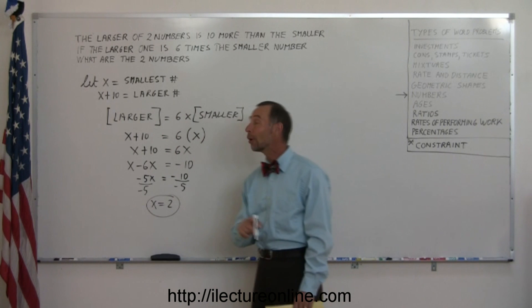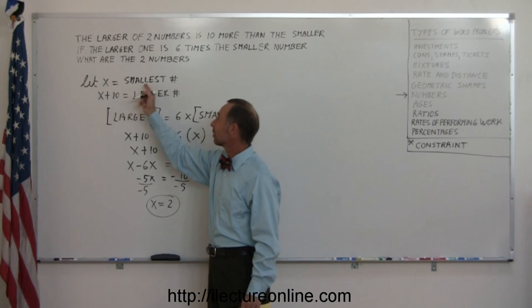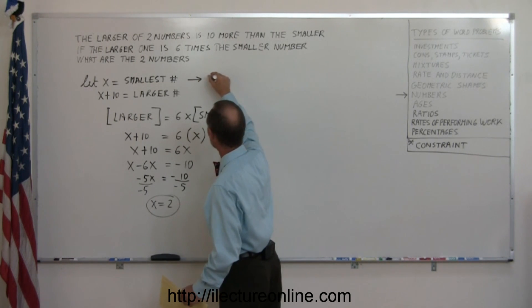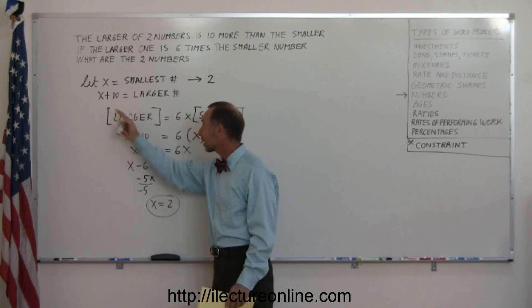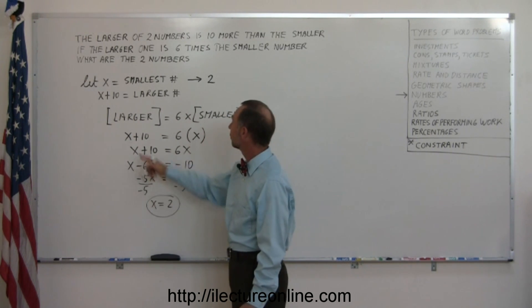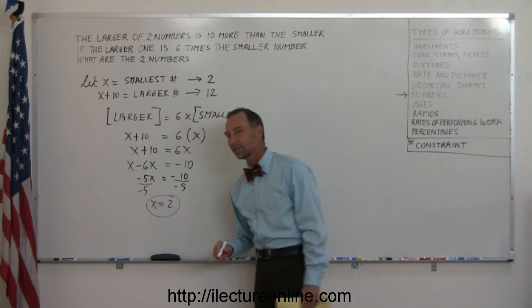Now we go back and see what we defined our numbers as. Since x was defined as the smallest number, therefore the smallest number is 2. And since x plus 10 represents the larger number, well, if x is 2, 2 plus 10, that means the larger number becomes 12.